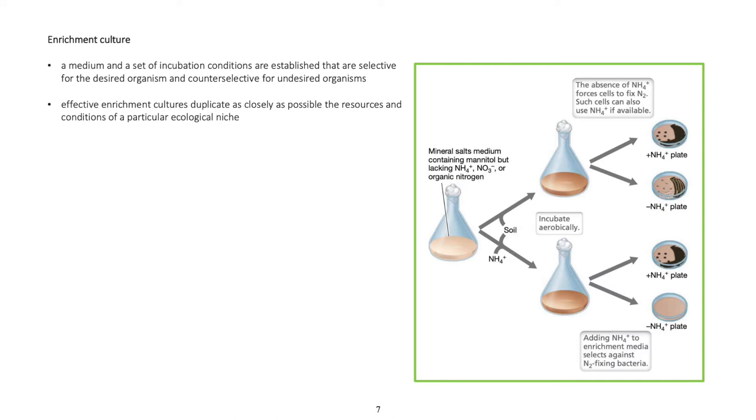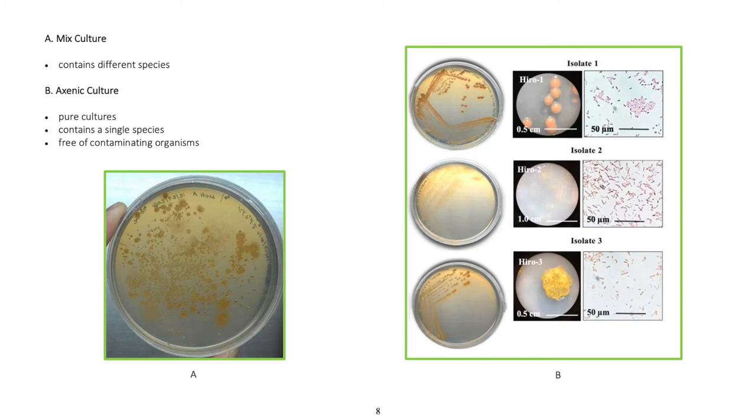Enrichment culture: A medium and a set of incubation conditions are established that are selected for the desired organism and counter-selected for undesired organisms. Effective enrichment cultures duplicate as closely as possible the resources and conditions of a particular ecological niche. Mixed culture contains different species. Axenic or pure cultures contain a single species, free of contaminating organisms.